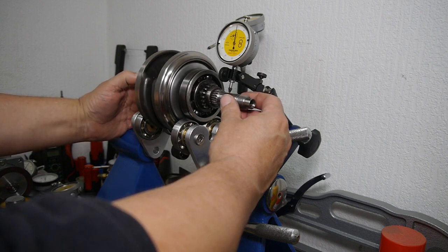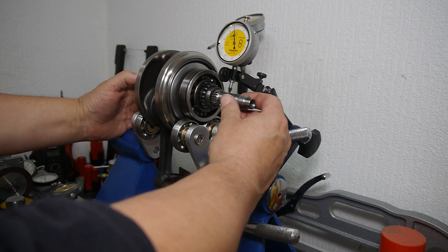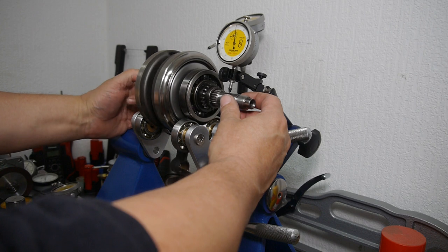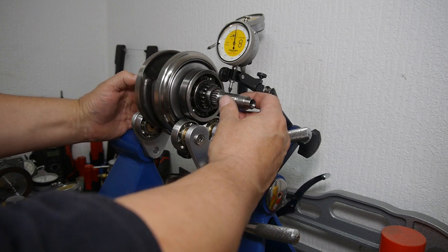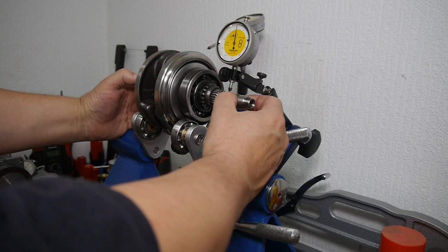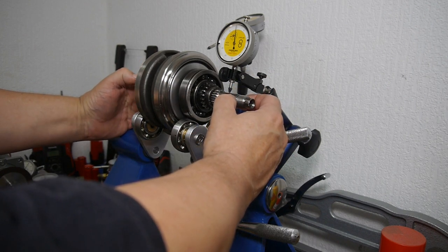That's within spec—between 0.25 and 0.3 somewhere in there. I always take a measurement before taking any cranks apart to see what they were like. It gives you an idea of how much stress an engine's had or whether it's been apart before.